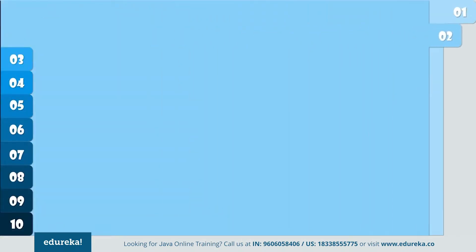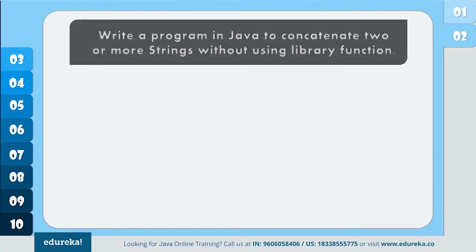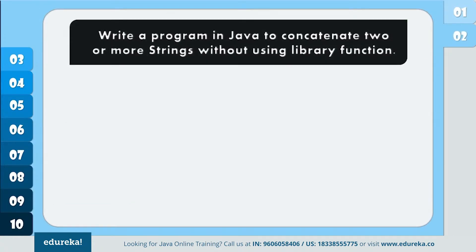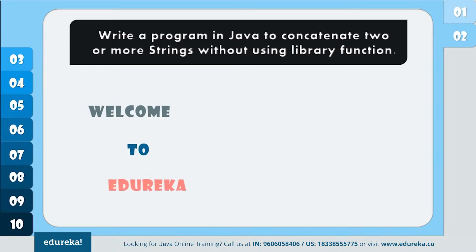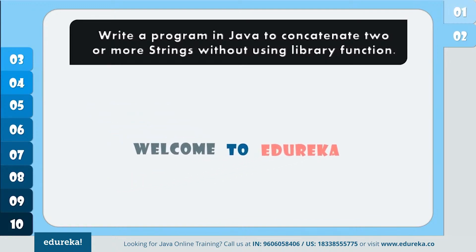Now let's see the next program. The problem statement is: write a program in Java to concatenate two or more strings without using a library function. That is, you have to concatenate or join two strings without the use of the library function concat. Let's see how to do that.